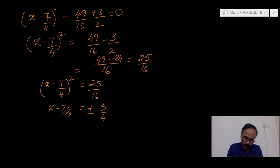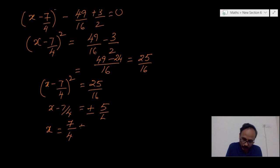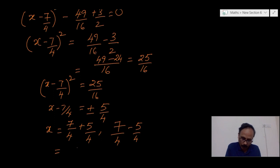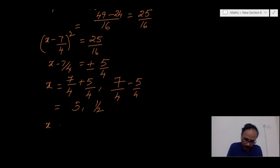Therefore, x is equal to — if minus 7/4 goes to the other side it becomes positive — so 7/4 plus 5/4 is one solution, and 7/4 minus 5/4 is equal to (7 minus 5)/4. Here, 7 plus 5 is 12, 12/4 is 3, and 7 minus 5 is 2, 2/4 is 1/2. Therefore, the solution set is x equals 3 and 1/2.